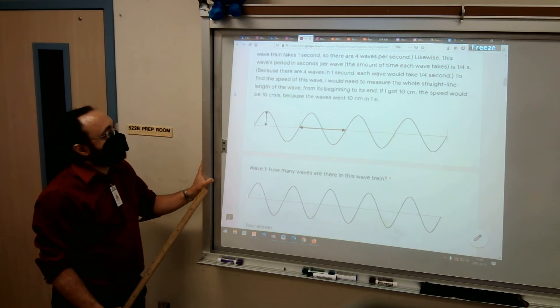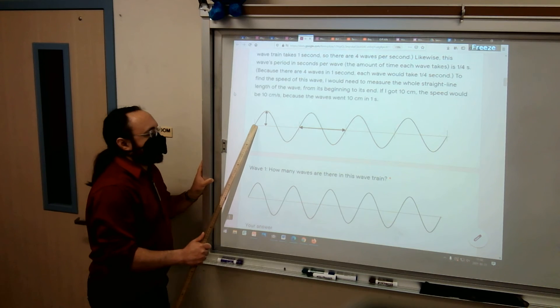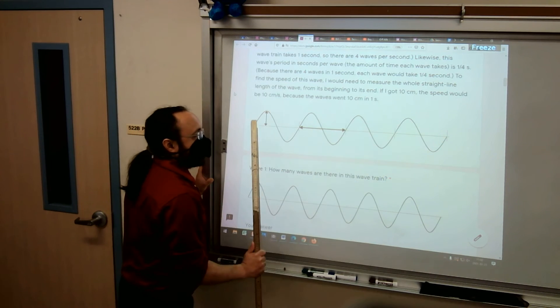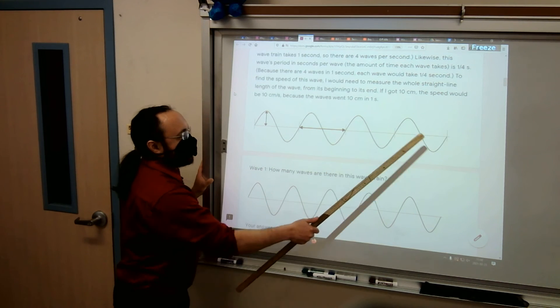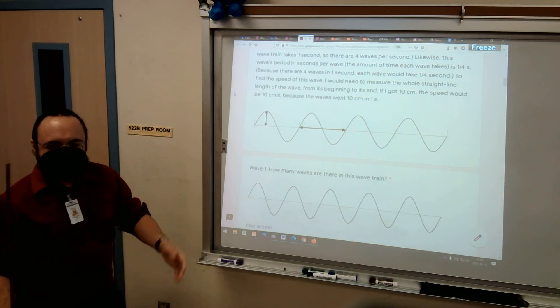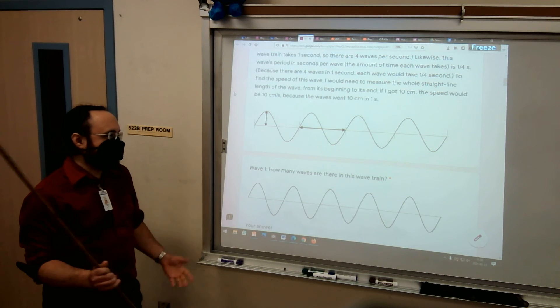Right, so frequency is waves per second, so four waves per second. Period is one-fourth of a second per wave. And that way you still have the four there and it makes more sense to me. It makes it easier, but whatever you like.